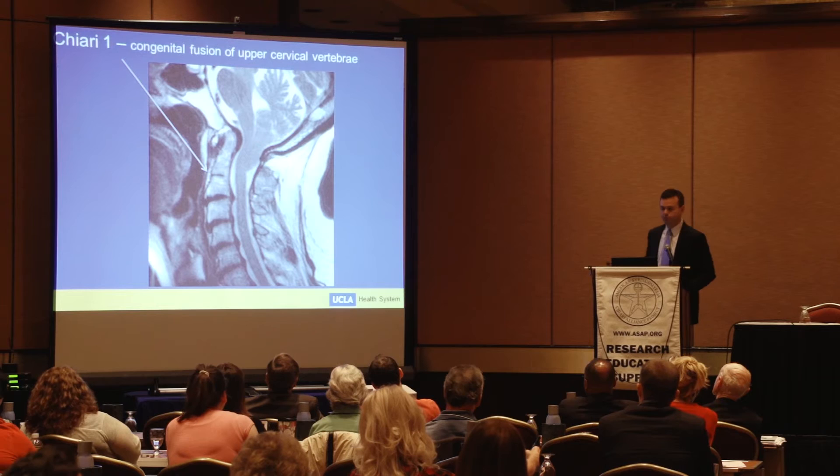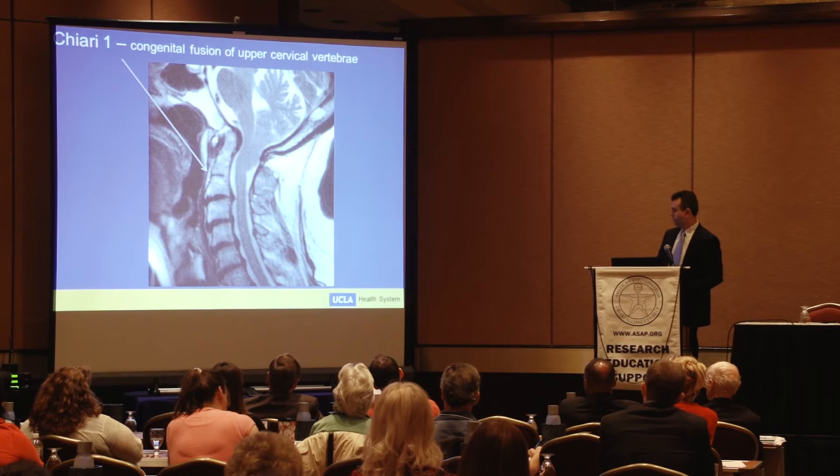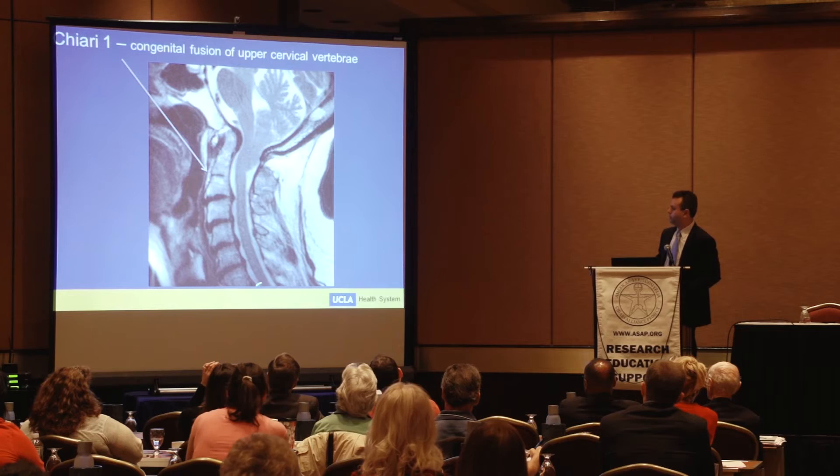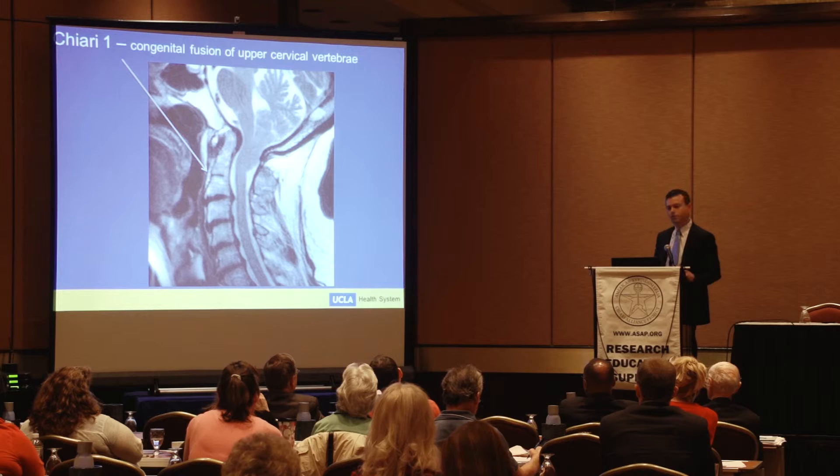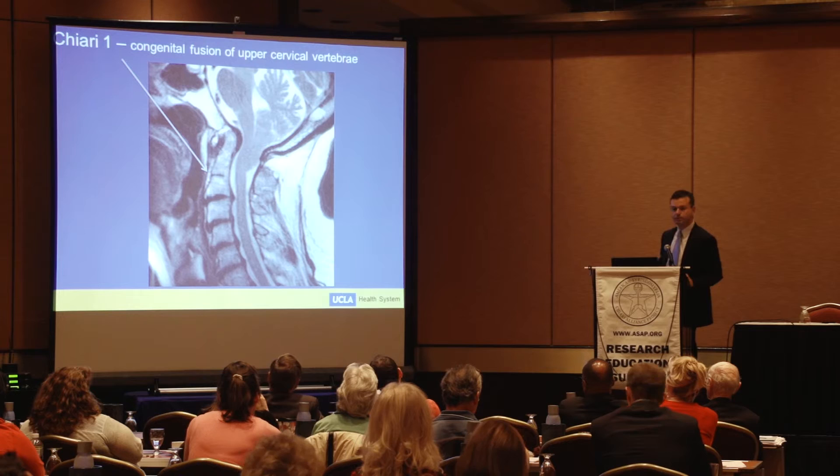Here in a Chiari 1 case we see congenital fusion of upper cervical vertebrae. These are incredibly common and massively underreported. They generally don't cause many symptoms so they're not recognized, but it's a nice corroborating feature when you do see it. You can see this vertebra is fused to the one below it.